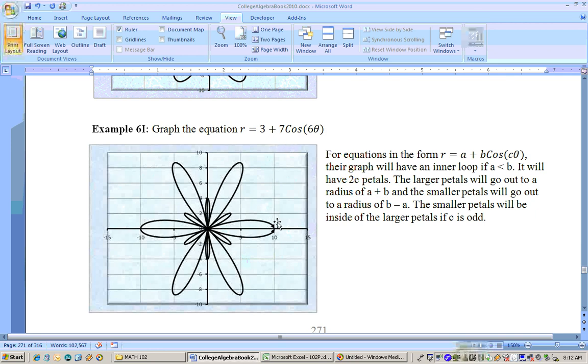Well, 3 plus 7 is 10, and that's how far they went out to, a radius of 10. And the smaller petals will go out to a radius of B minus A. 7 minus 3 is 4, and that's how far the smaller petals went out to.